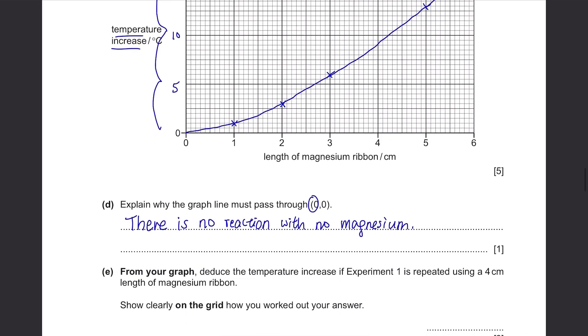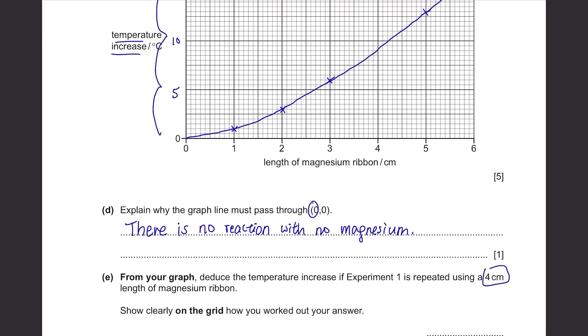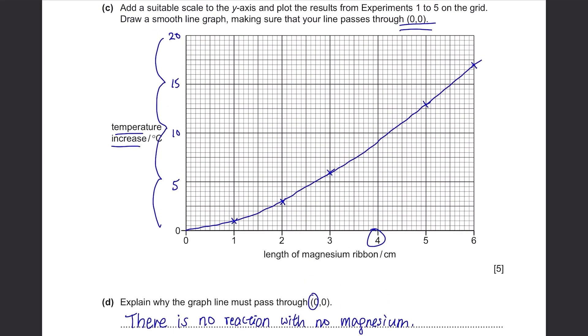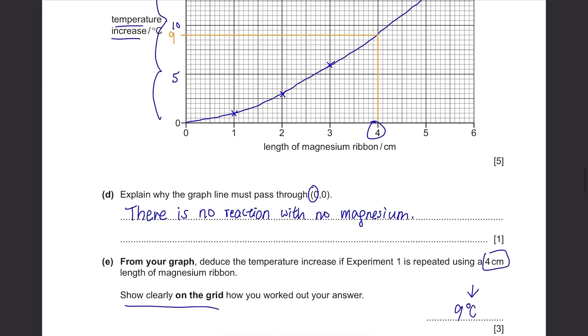Part E: From your graph, deduce the temperature increase if experiment 1 is repeated using a 4 cm length of magnesium ribbon. Show clearly on the grid how you worked out your answer. You'd have noticed that we didn't plot anything for 4 cm, so let's see where it meets our graph. First, draw a straight vertical line until it touches the graph. Then draw a horizontal line to the y-axis to read its point. It's 9, so the temperature increase will be 9. Don't forget to put a unit. It's easy to forget. And since they said show it on the grid, don't erase these lines.